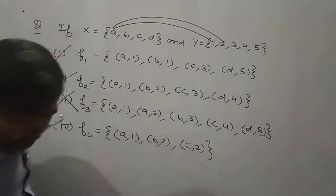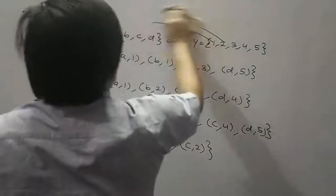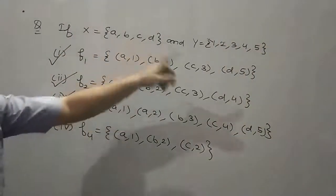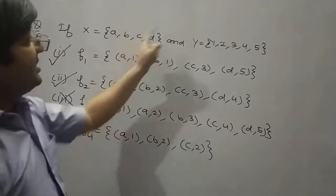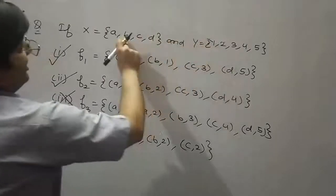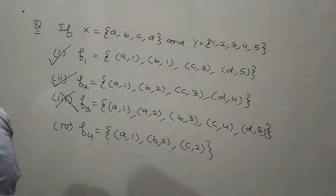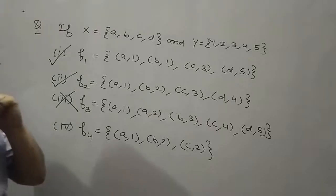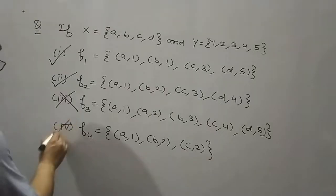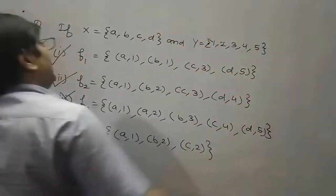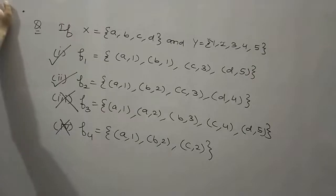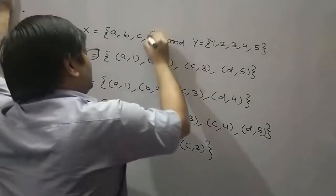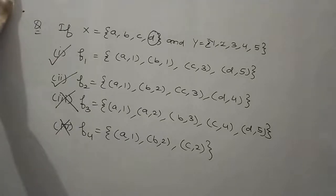Now come to the fourth type. F4 = {(A,1), (B,2), (C,2)}. But the element D does not have any image — there is no element in set Y corresponding to element D. That is why F4 is not a function.